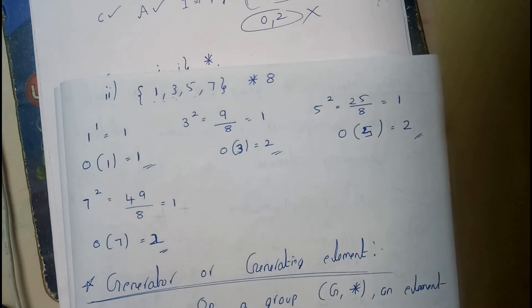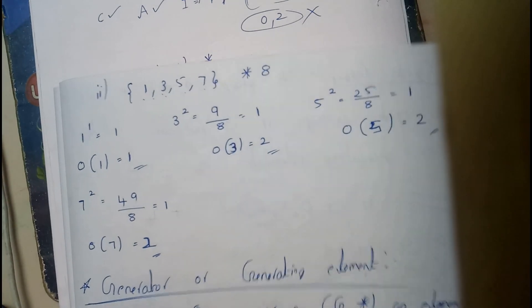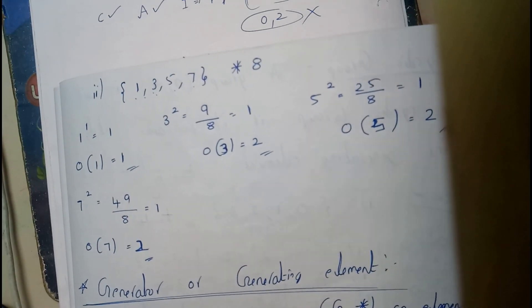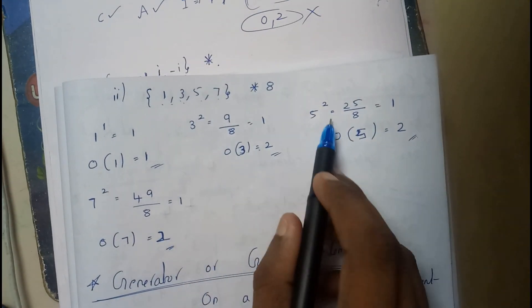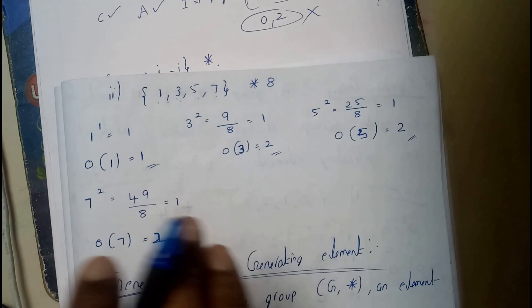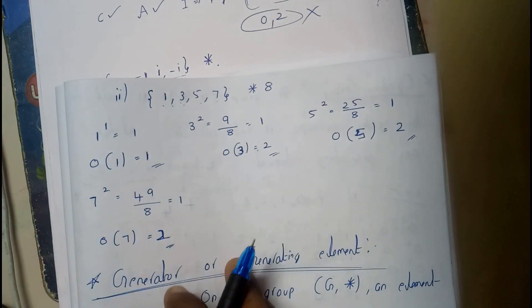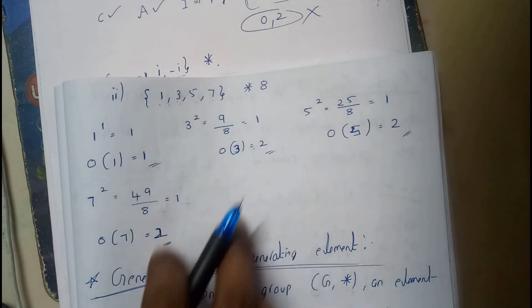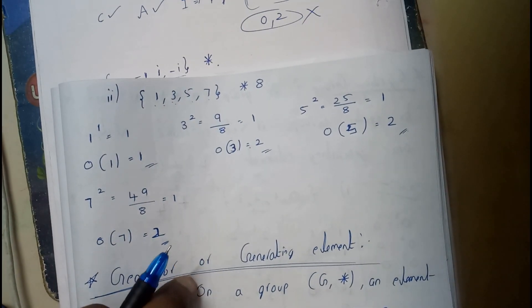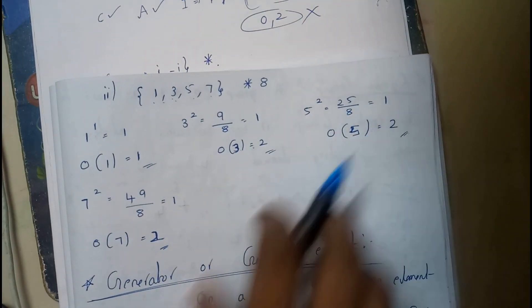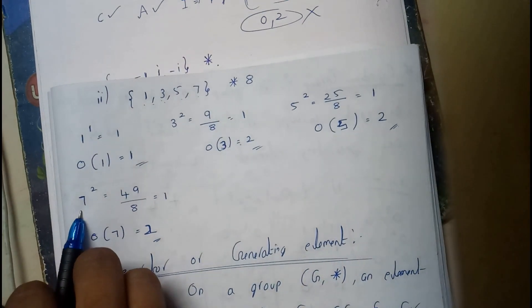3^2 is 9, and 9 mod 8 equals 1, so order of 3 is 2. For 5, 5^2 is 25, 25 mod 8 gives remainder 1. For 7, 7^1 is 7.